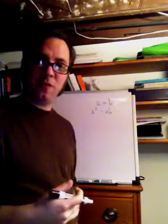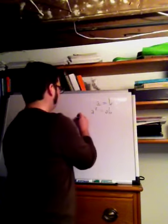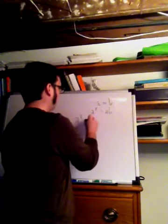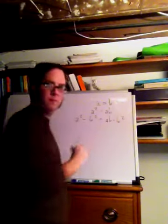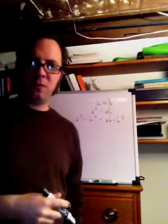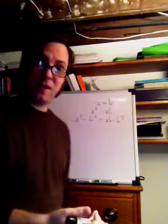Now I'm going to subtract b squared from both sides. a squared minus b squared equals ab minus b squared.